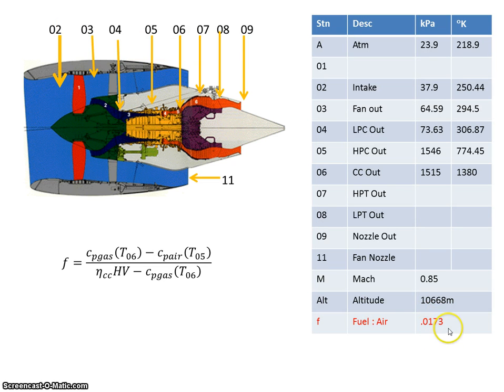So I'm going to plug that here into my list of results. I now have a fuel to air ratio of 0.0173. So in the next video, we'll look at what is the output of the low pressure turbine. Bye.